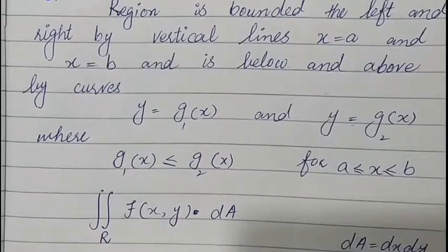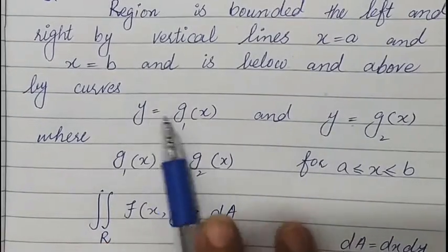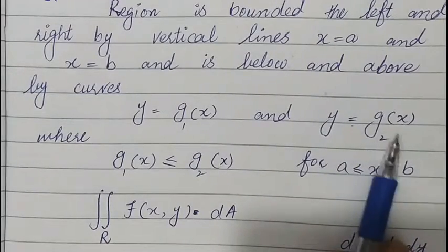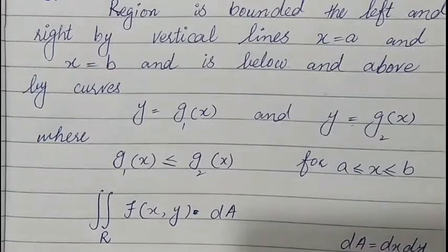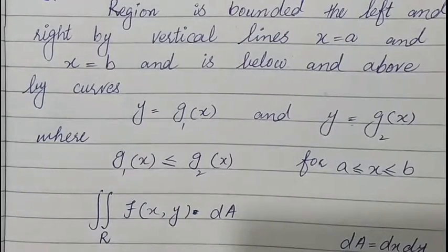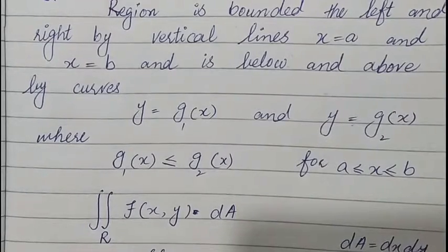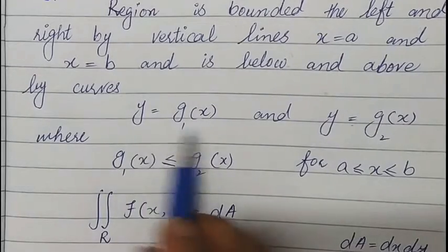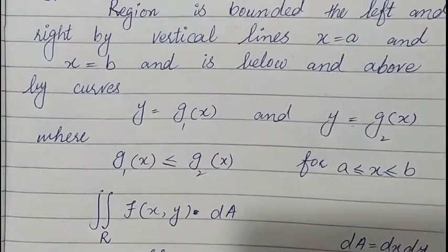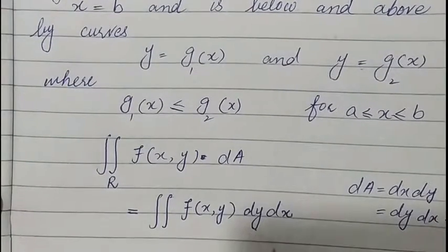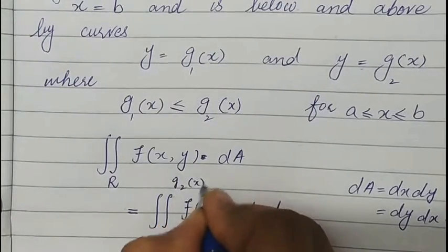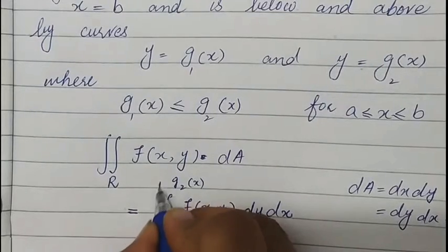Since the values of y depend on the value of x through the curves g1(x) and g2(x), the double integral over the region can be written as the integral from a to b of the integral from g1(x) to g2(x) of f(x, y) dy dx.